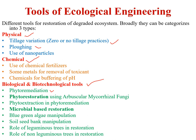Blue-green algae can also be used in degraded soil for restoring soil fertility. Soil seed bank manipulation can encourage emergence of new plants. Leguminous trees are helpful in restoration of degraded sites as they add nitrogenous leaf litter to the soil, which after decomposition releases nitrogen — helpful in restoration of degraded site conditions. Non-leguminous trees also play a significant role in restoration of degraded sites.